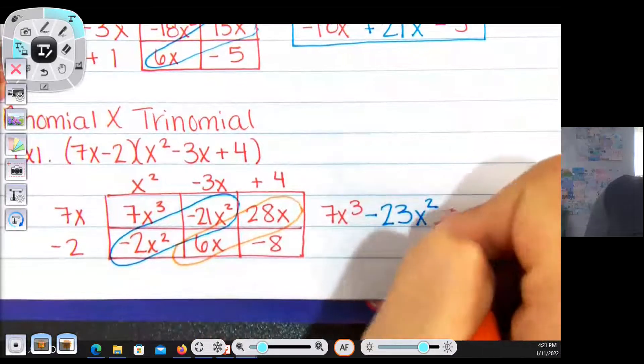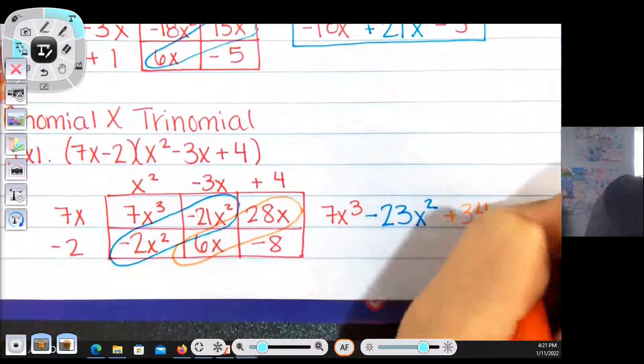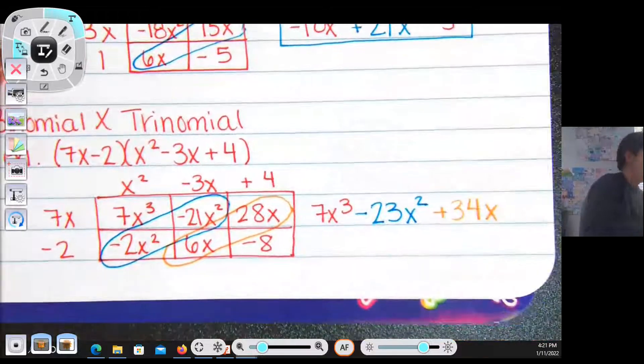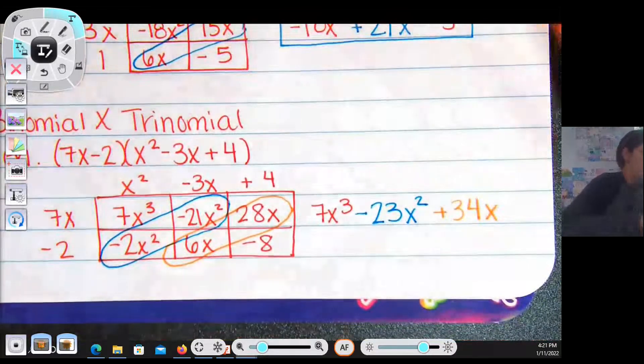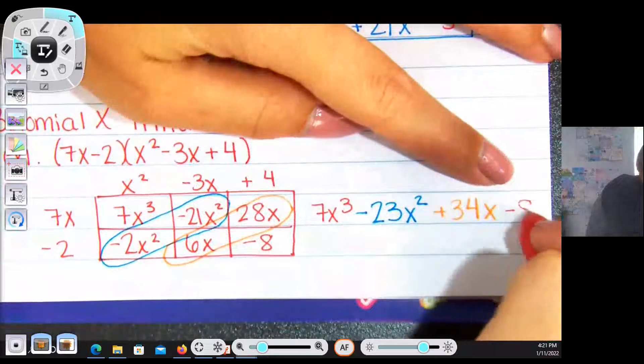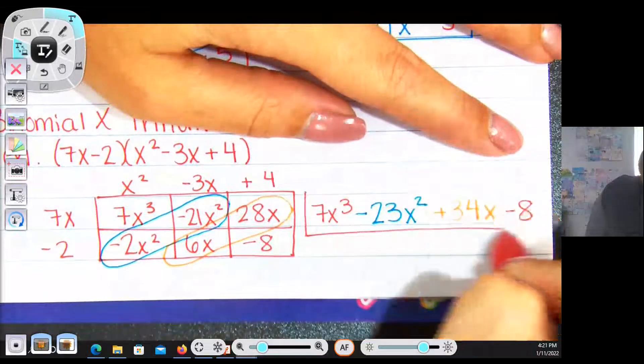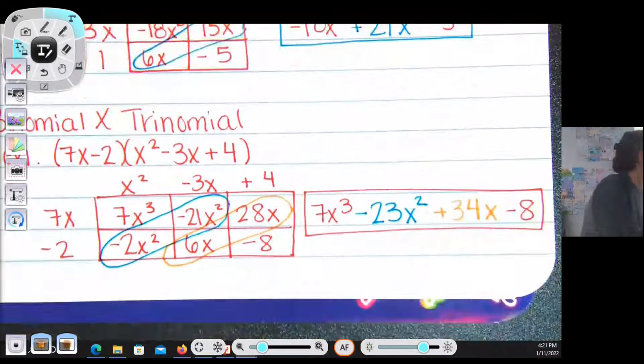34x. The last term is exactly the same. It has no friends, so minus 8. And that is your answer.